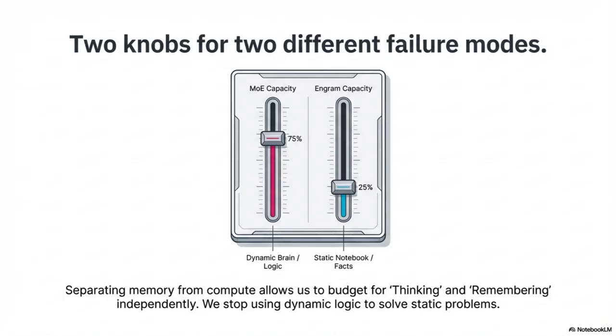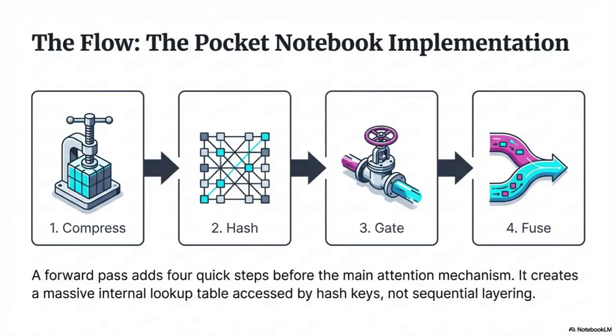The core technical problem: you can't parameterize every possible N-gram in the universe, so you have to use hashing — and hashing means collisions. They manage that with multi-head hashing. For any given N-gram, they don't use just one hash function; they use K distinct hash heads. Each head pulls back an embedding, and they're all concatenated, building in robustness.